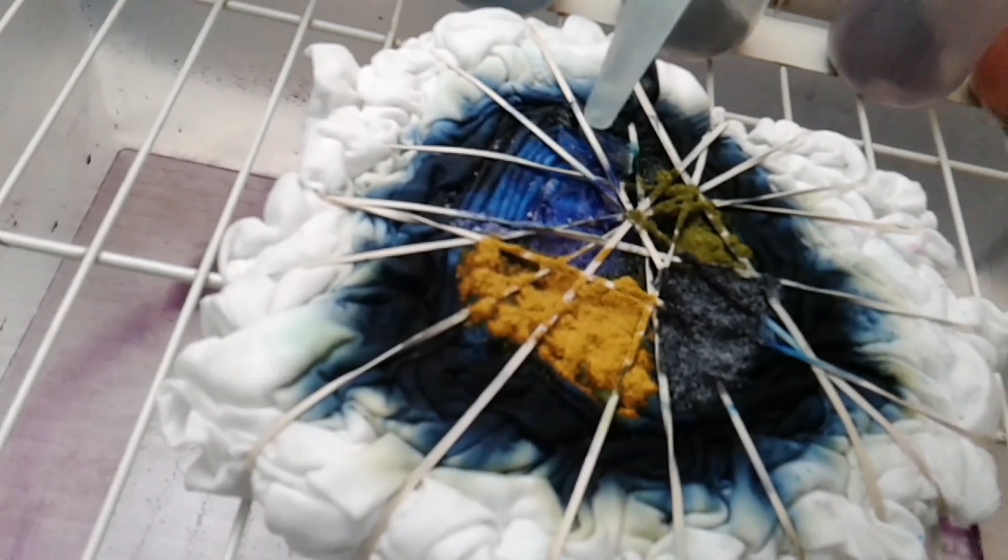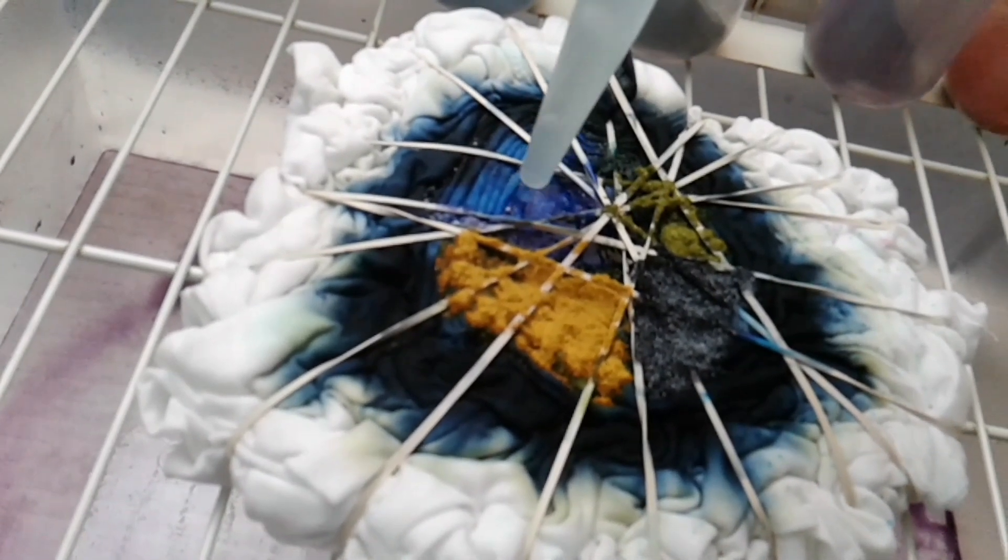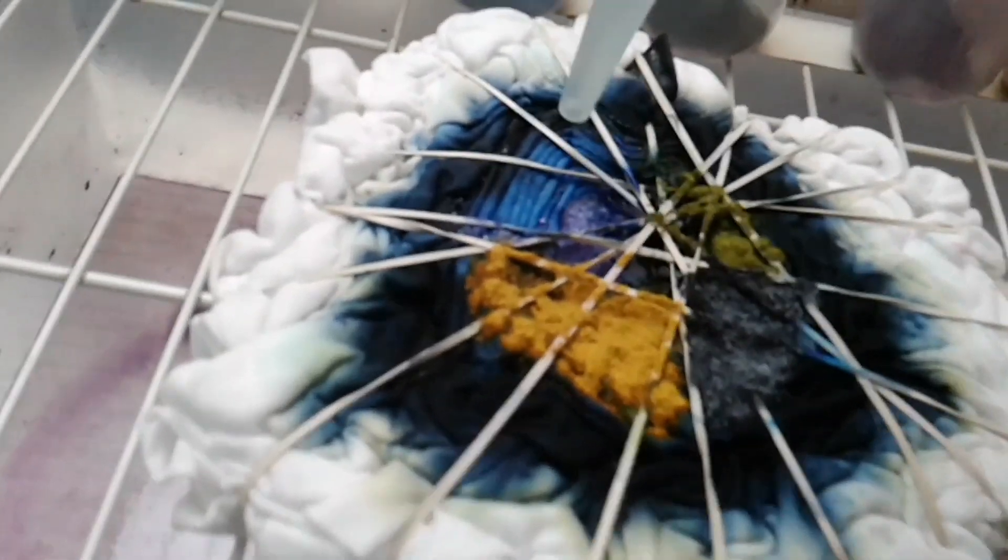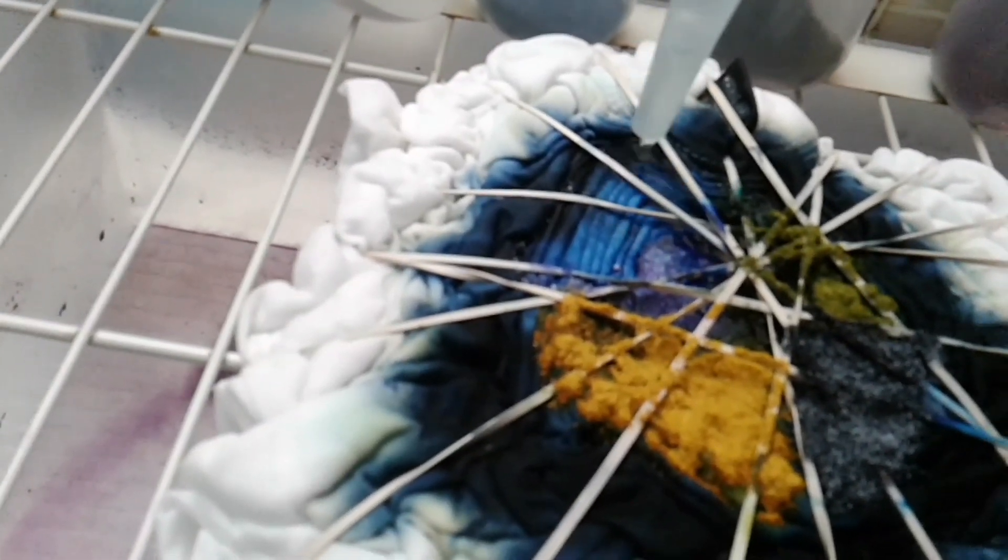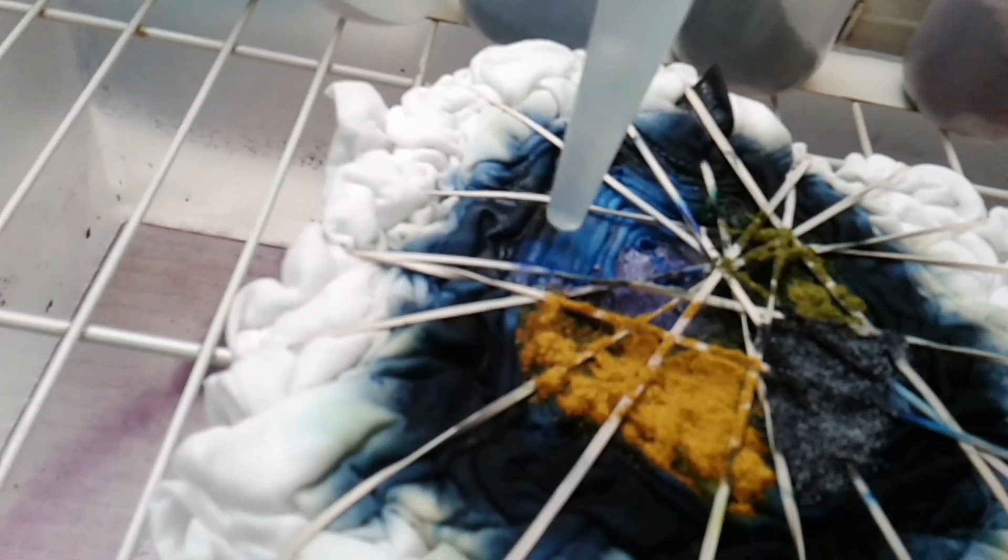As you can see, one ounce of water covers a fairly good amount of t-shirt. Stay probably about a quarter inch away. You don't want to get too close because you'll suck up the dye in there.